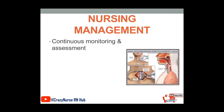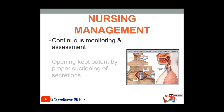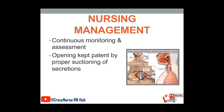For nursing management, continuous monitoring and assessment is very important if the patient has a tracheostomy. The opening must be kept patent by proper suctioning of secretions. If your patient has a tracheostomy or an endotracheal tube, it is a must to suction the patient as needed in order for the airway to be cleared of possible secretions that might obstruct it. We also have to position the patient in semi-Fowler's position, which can help expand the lungs and increase the breathing mechanism of the respiratory system.